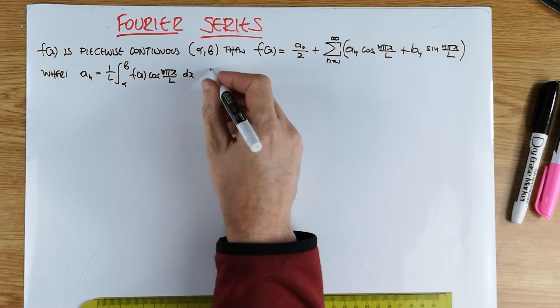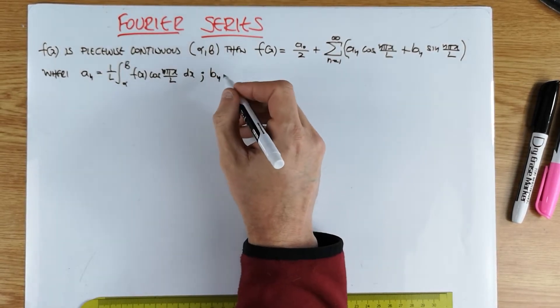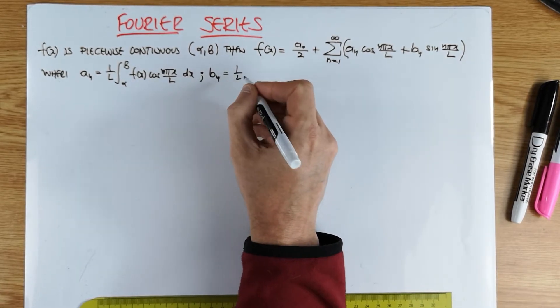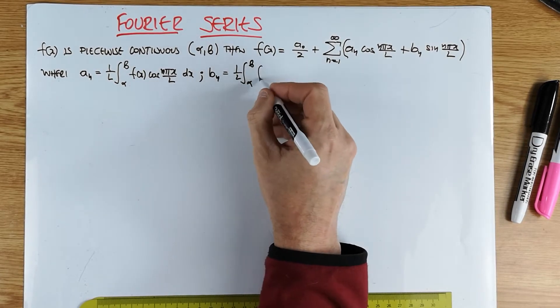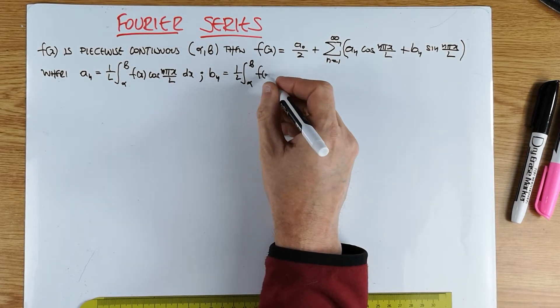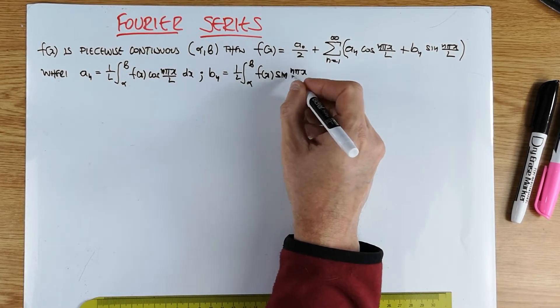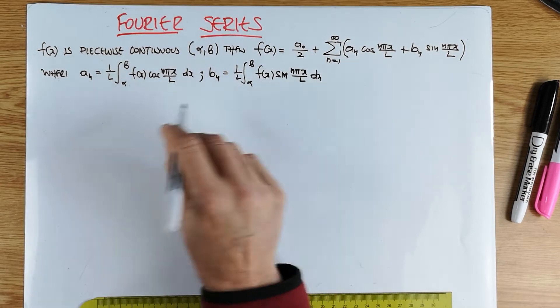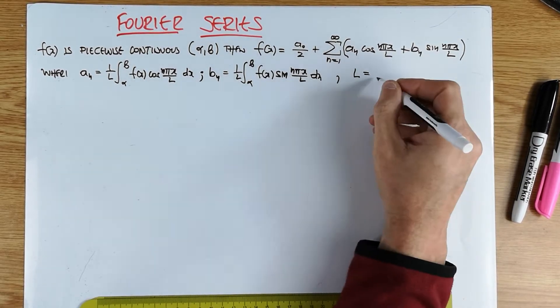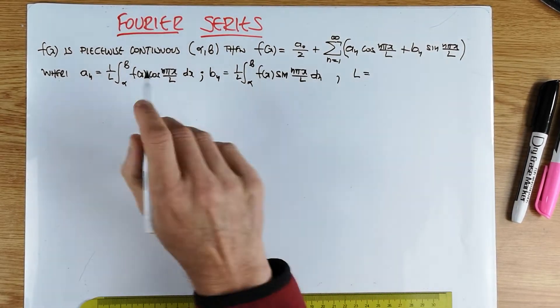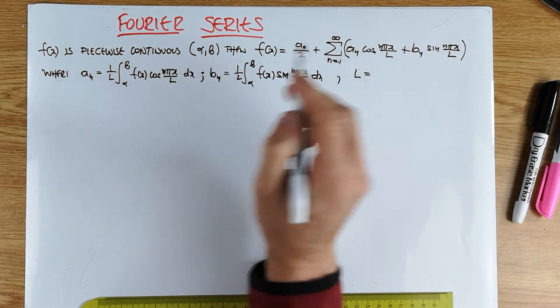And the b_n's: b_n is 1 over l, alpha to beta, f of x sin n pi x over l dx. Very similar expressions. And let's finally define what this l is. l is in fact known as the half period. It's actually, if the interval is a to b, half this interval, so b minus a divided by 2, or beta minus alpha over 2.